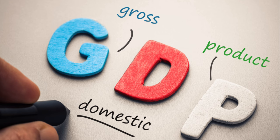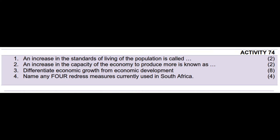This brings us to homework activity 74. Question 1: What do we call an increase in the standards of living of the population? Two marks. Question 2: What do we call an increase in the capacity of the economy to produce more goods and services? Two marks. Question 3: Differentiate economic growth from economic development. Eight marks. Question 4: Name any four redress measures currently used in South Africa. Four marks.